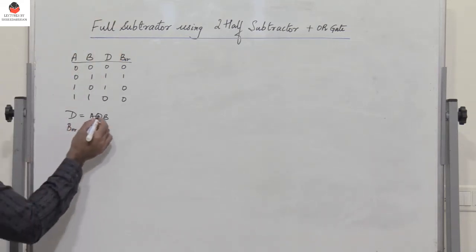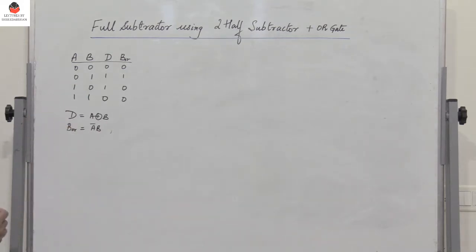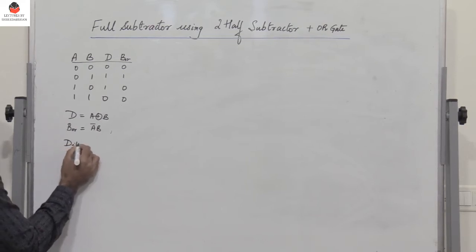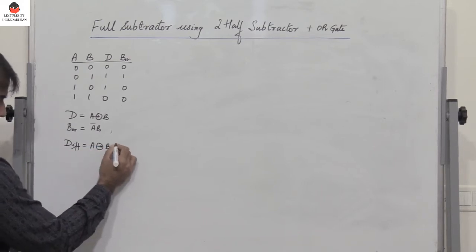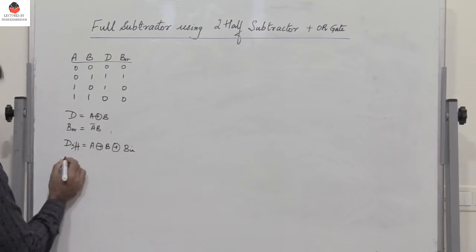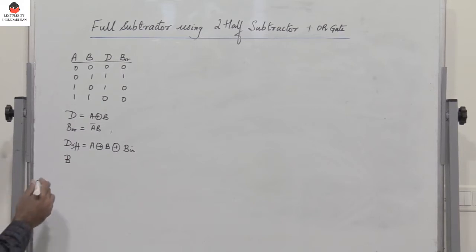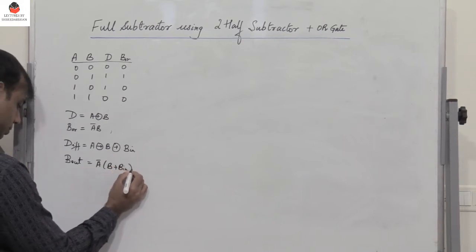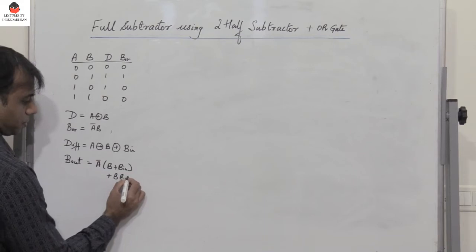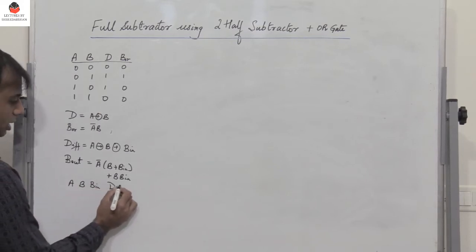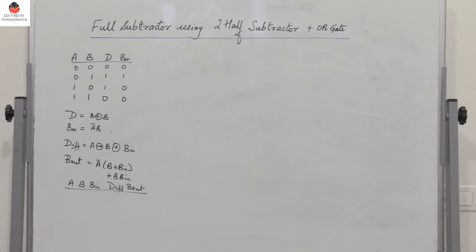This is the expression we already know. Now for the full subtractor: the difference is nothing but A XOR B XOR B_in, given three inputs A, B, and B_in. The borrow out expression is: A̅B + B_in(B + A̅). So the difference is the XOR of the three inputs and borrow out is given by that expression.